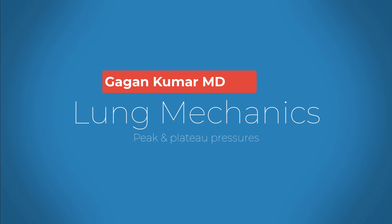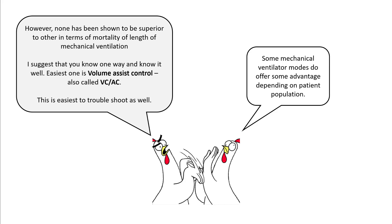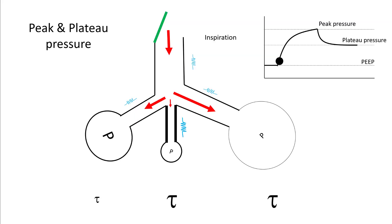Today we'll be talking about peak and plateau pressure. Different modes of mechanical ventilation have not been shown to be superior to each other, so my suggestion is to know one way of ventilating your patient. The easiest one is volume assist-control. I like it because it's easy to troubleshoot and most of the studies have been done using this mode. Other modes do offer some advantage depending on the patient population, but we won't talk about them here.